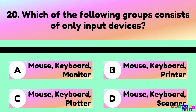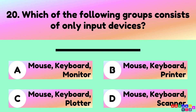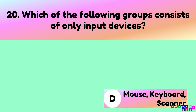Which of the following groups consists of only input devices? Mouse, keyboard, and scanners are examples of input devices.